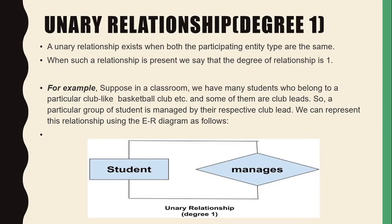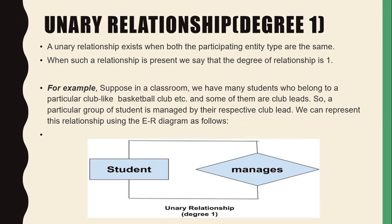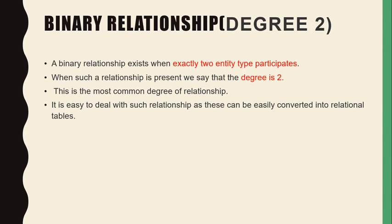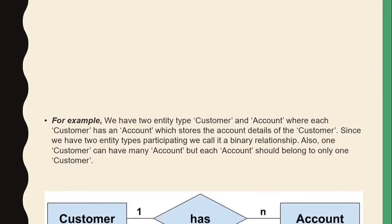The degree is one because only one entity is involved in that relationship. The second is a binary relationship, which has degree two. Binary means two entity types are participating. When such a relationship is present, we say the degree is two. It is the most common degree of relationship and is easy to handle in a relational database, as it is easily converted into tables.